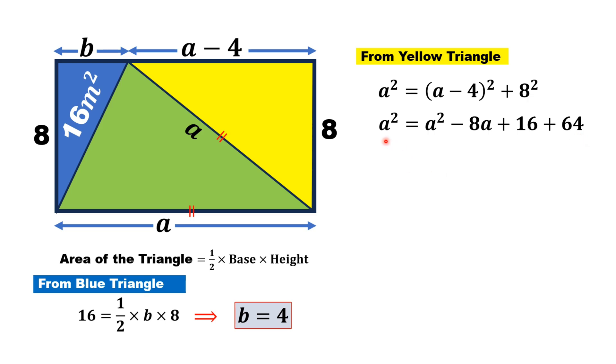The A squared terms cancel out, and after simplification we get 8A equals 80. Dividing by 8 on both sides, we get A equals 10 units.